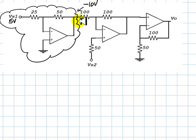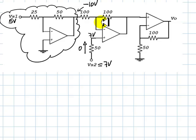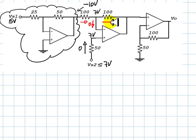That negative 10 volts is now input to the second amplifier. The voltage applied at Vs2 is 7 volts. The 50 kilohm resistor carries no current because this is an assumed ideal amplifier. So the voltage at the non-inverting input Vp is 7 volts. Because we are assuming this is a non-saturated amplifier with negative feedback, the voltage at the inverting input Vn is also 7 volts. The current into the ideal amplifier input is 0 amps, meaning the two resistor currents are equal.